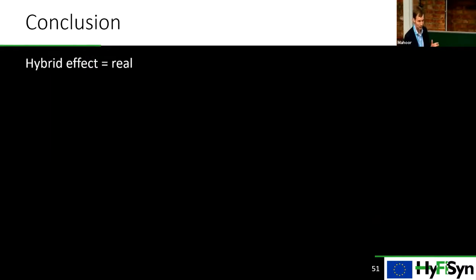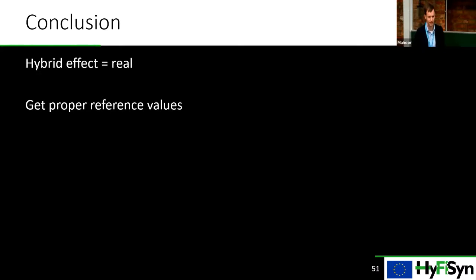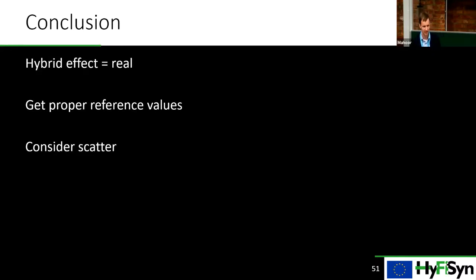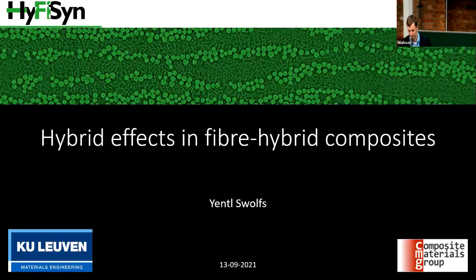In overall conclusion: even though the hybrid effect was controversial when first discovered in 1972, it is clearly real — there's too much evidence to call it controversial. It is important to get proper reference values, which is very often forgotten. Always consider scatter, since many reports claim improvement without accounting for statistical variability. And generally, improve dispersion for better hybrid effects — except for translaminar fracture toughness, where blocking fibers together is better. With that, I conclude and am happy to answer questions.